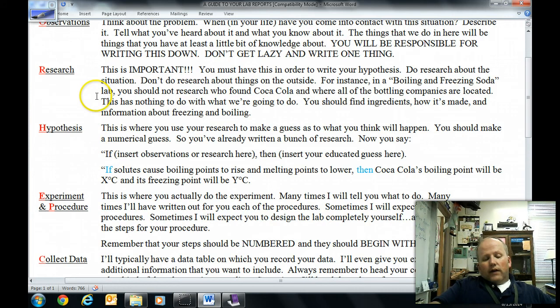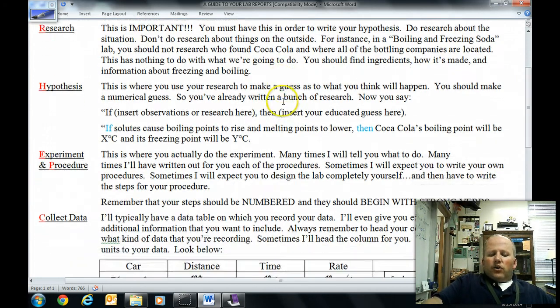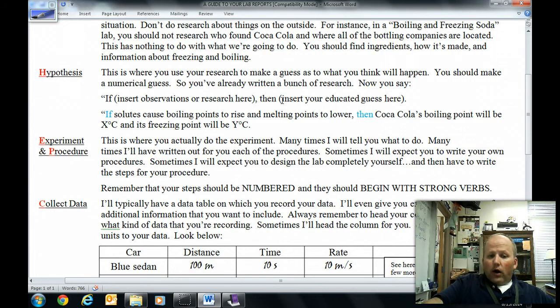The next step of PORHEPCAC or scientific method is writing a hypothesis. Your paper says this is where you use your research, and I'll add, or your observation to make a guess about what you think will happen. You should make a numerical guess. So you've already written a bunch of research and made some observations, so now you can write a hypothesis. But here's how you do that. And we have just a general way of saying it, but then we have an example. The way to write a hypothesis is to say, if, observation or research, then what do you think will happen?